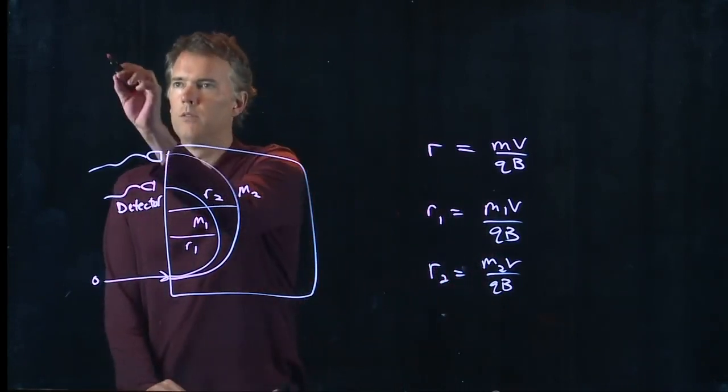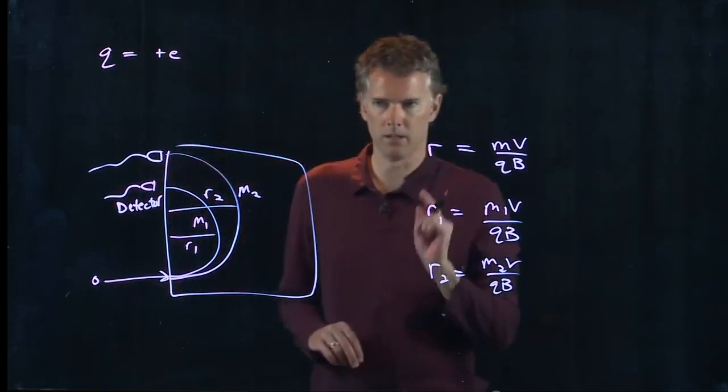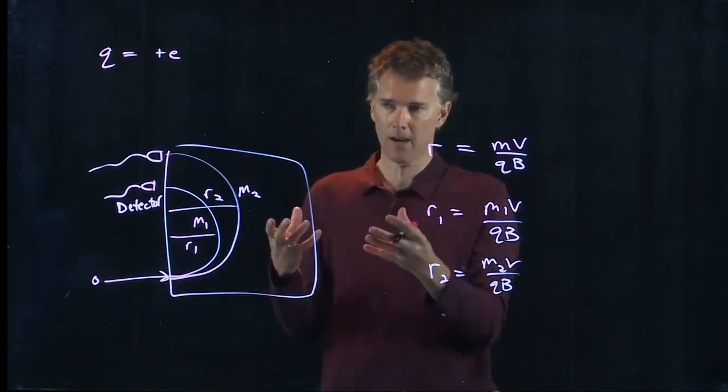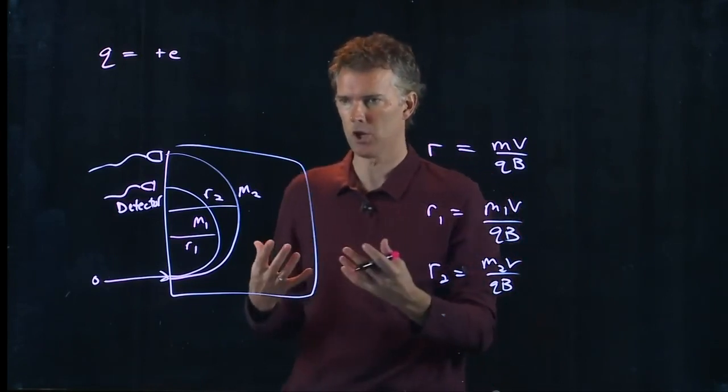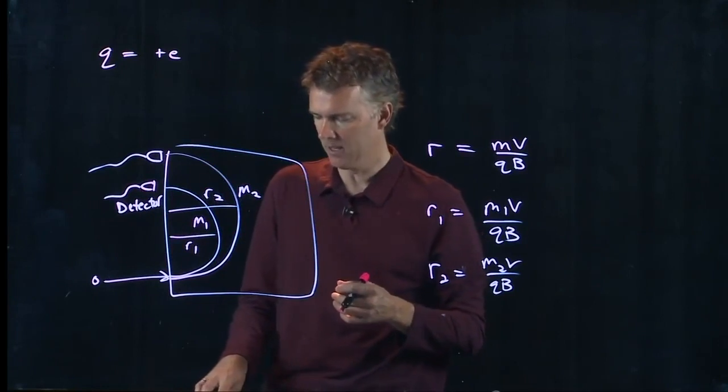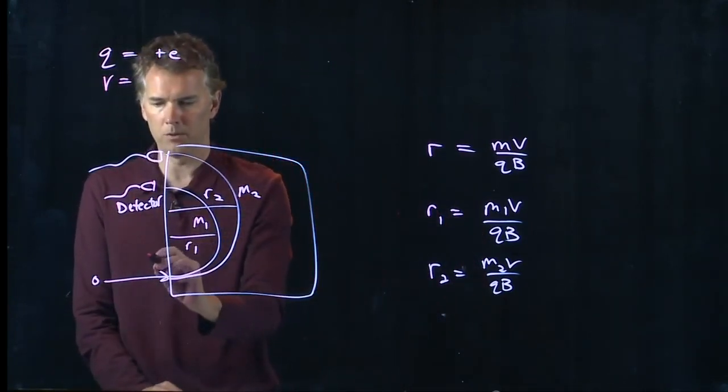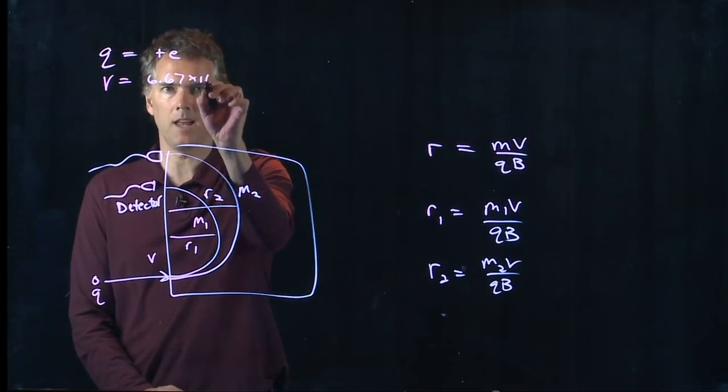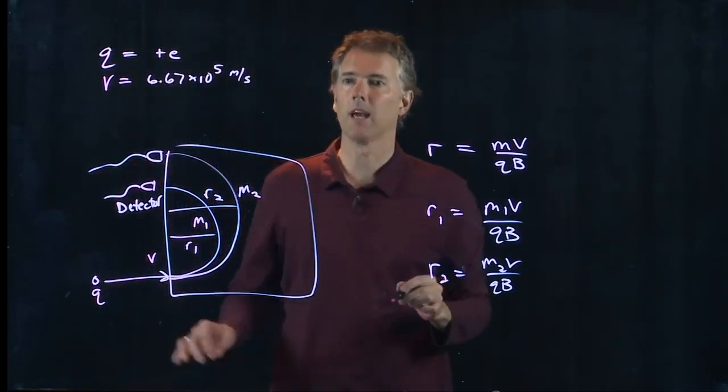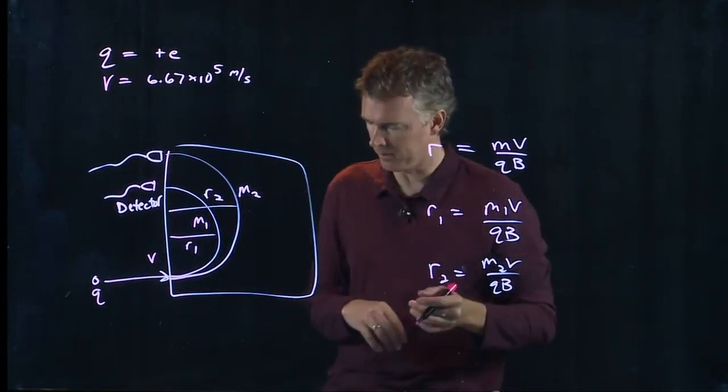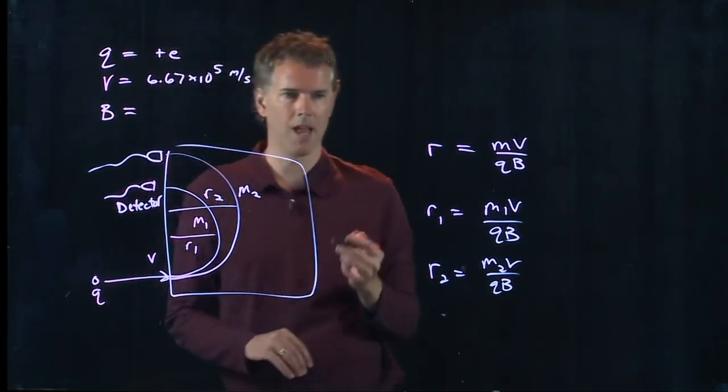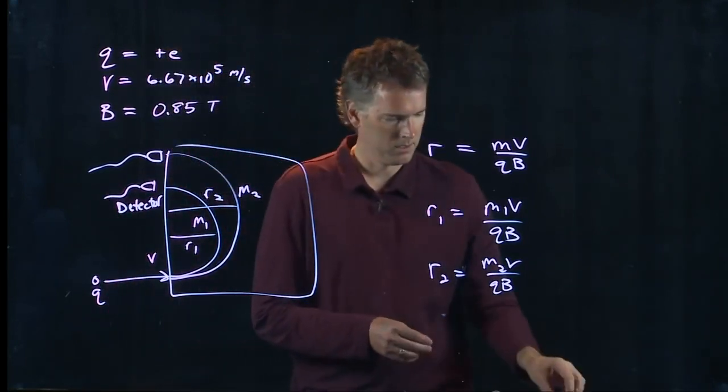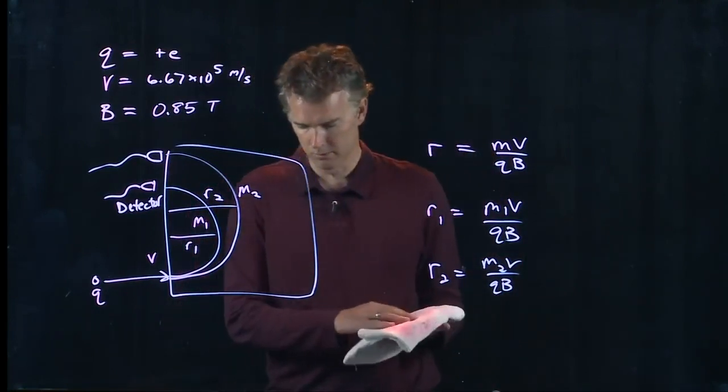The q is one electron. That's the overall charge of the particle coming in because it was some atom that you knocked off one electron, so it has a net charge of positive 1.6 times 10 to the minus 19 coulombs. The v of these particles coming in is 6.67 times 10 to the 5 meters per second. They come in very fast, and this is part of why the thing is kind of expensive. The b is also a very big magnetic field, 0.85 tesla. This is why it's expensive, because it's hard to make big strong magnetic fields.